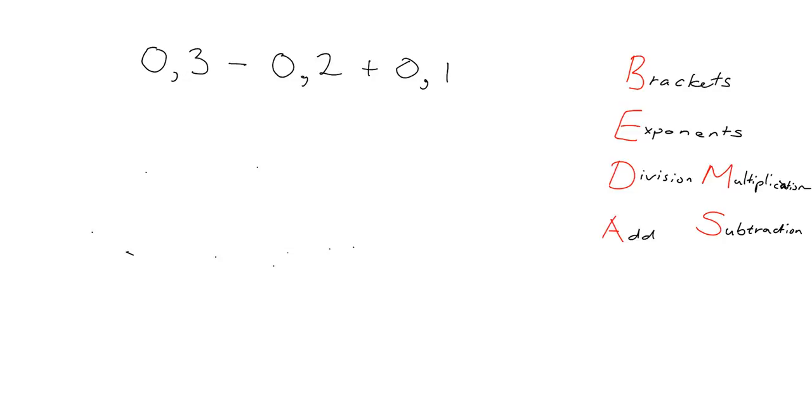Okay, last quick example. Say we had to do 0.3 minus 0.2 plus 0.1. Now here the only operations we've got are addition and subtraction. And have a look here in your BEDMAS. Addition and subtraction are on the same level. So it isn't one that comes before the other. And so the rule for that is you simply work from left to right.